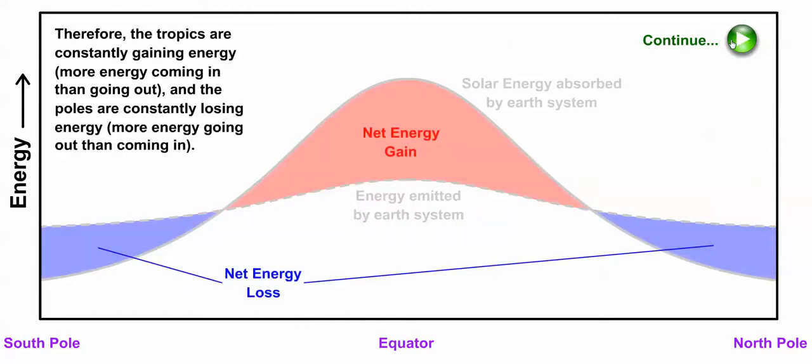So if we construct an energy budget, we'll see that the tropics are constantly gaining energy because more energy comes in during the course of the year than goes out.